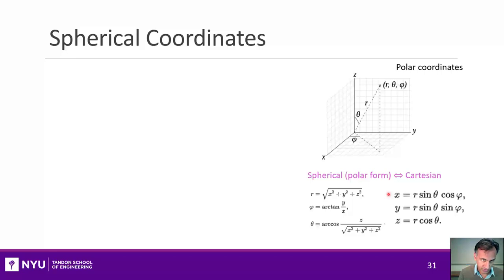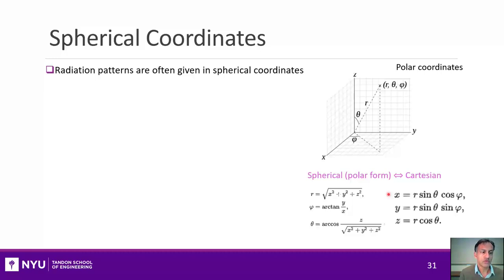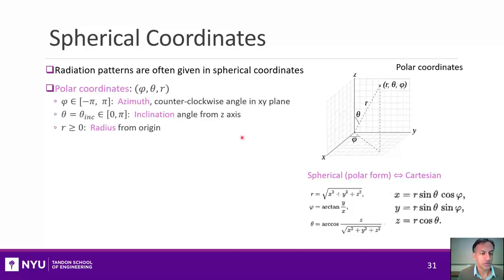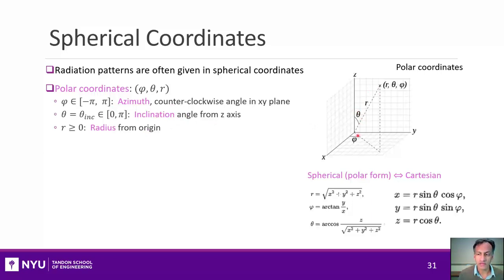The next thing we need to understand about antennas is spherical coordinates, because it's natural to think about the angle and distance you are from a transmitter or receiver. In polar coordinates, you represent a point by two angles and a radius. One angle is the azimuth angle — the angle along the XY plane from the X-axis — and the other is the inclination angle, the vertical angle from the Z-axis. Then you draw a line with radius R to reach your point.